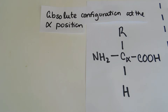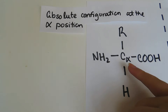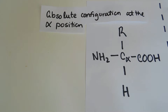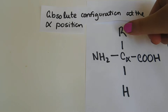The first item on the agenda is to look at the absolute configuration at the alpha position. This is the general structure of an amino acid. You have an alpha carbon in the center, next to a carboxylic acid group, an R group — which stands for any functional group — and then a hydrogen and an amino group. This R group is what differentiates one amino acid from the other 19. Depending on what that R group is, it determines if that amino acid is a tyrosine, a glutamate, or any of the other 20. They only differ by whatever this R group is.